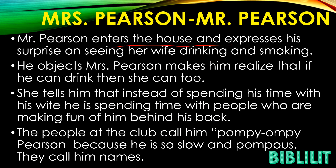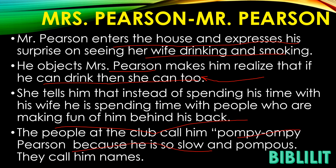Mr. George Pearson enters the house and expresses his surprise on seeing his wife drinking and smoking. He objects, but Mrs. Pearson makes him realize that if he can drink, then so can she. She makes it very clear that they are two equal people — not one elevated and the other dominated. She also tells him that instead of spending time with his wife, he is spending time with people who are making fun of him behind his back. The people at the club call him Pompey Ompey Pearson because he is so slow and pompous.